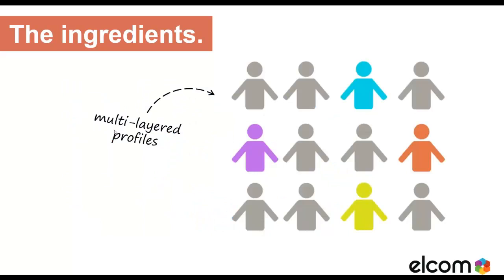The next key ingredient is a clear understanding of your users. It's important to be able to group your users across a range of facets such as group membership, user preferences and marketing segments. This can play out through permissions, interests, expertise and a whole bunch of other ranges. The more layers that you can apply to your users, the more equipped you'll be to match up relevant information to them.